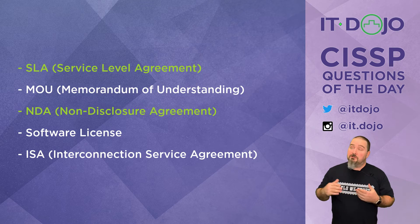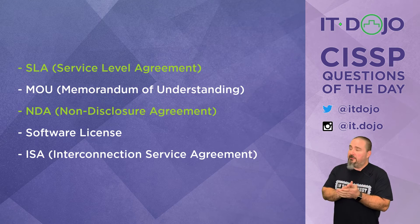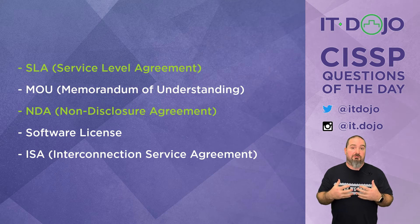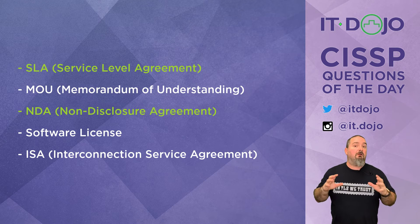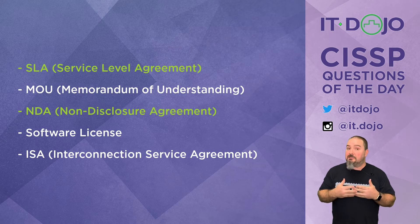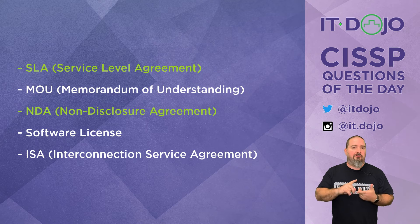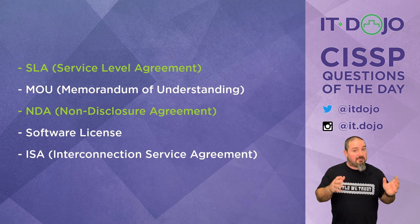The last answer choice — which may apply in some circumstances, which is why I said 'most likely' rather than 'could possibly be' — is an interconnection security agreement. An ISA is when two organizations agree to connect their resources together for some mutual benefit, though they are not part of the same organization. An ISA defines all the conditions regarding that connection: confidentiality requirements, firewalls, VPNs, intrusion detection, auditing, user training, and security awareness.